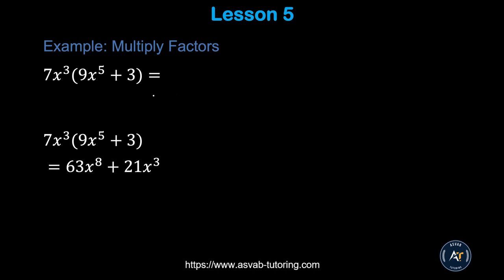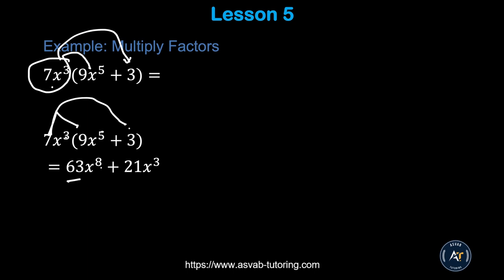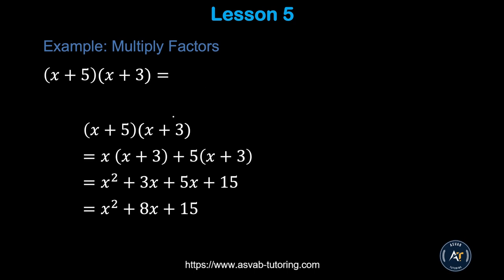Now we'll learn how to multiply expressions with variables. For example: 7x cubed times the quantity (9x to the fifth plus 3). You distribute 7x cubed across both terms: 7 times 9 is 63, and x cubed times x to the fifth gives x to the eighth, so the first term is 63x to the eighth. Then 7 times 3 is 21, times x cubed gives 21x cubed. So the answer is 63x to the eighth plus 21x cubed.